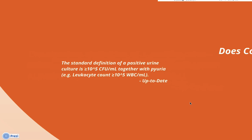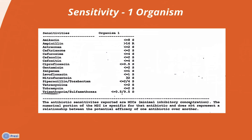Now let's look at a sensitivity table. In the sensitivity table, there's a list of antibiotics that have been tested. And on the next column, there's a list of numbers, which we'll talk about. And then finally, there's a column that includes either S or R. S means sensitive, and R means resistant.